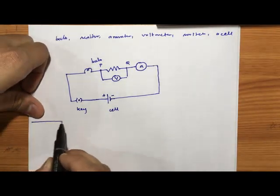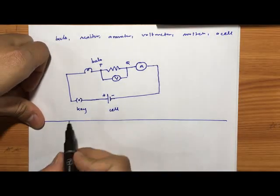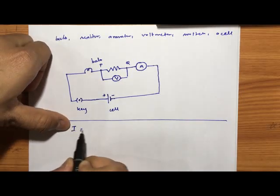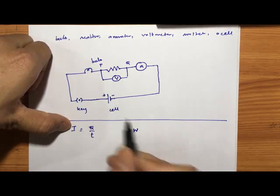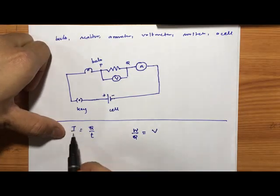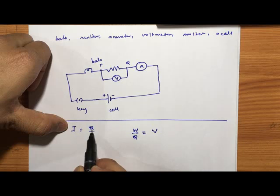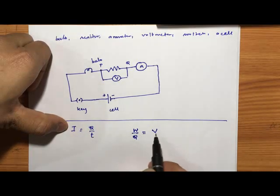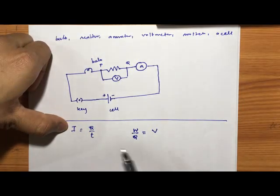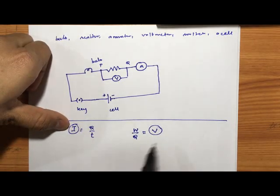So that was all about circuit diagrams. As discussed in the previous class, current is I = Q/t, and work done per unit charge is defined as potential difference. So in these equations I have the relationship between I and Q, and between Q and V, but we don't yet have any direct relationship between I and V.